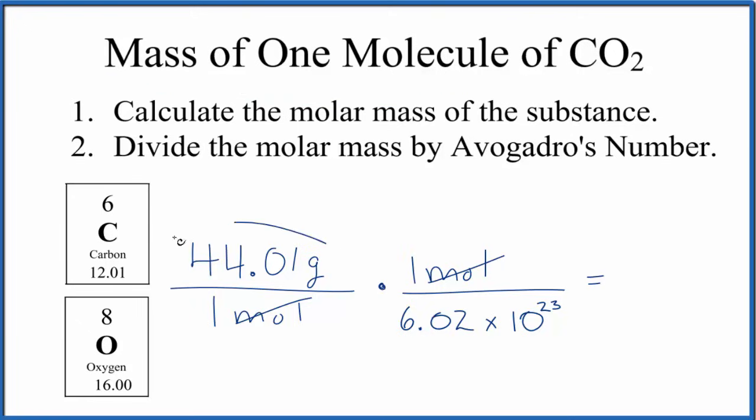Really, all we're doing is taking the molar mass for CO2 and dividing by Avogadro's number. Here we're left with the units of grams, so we know we did this right.